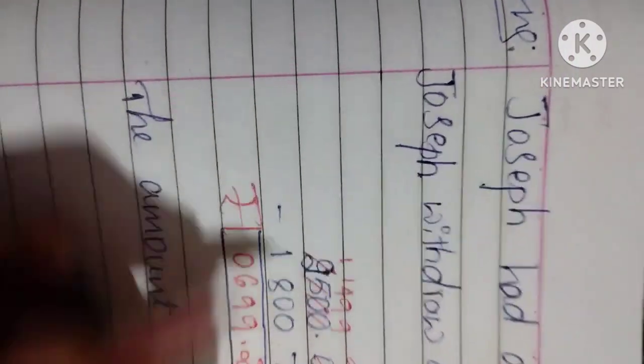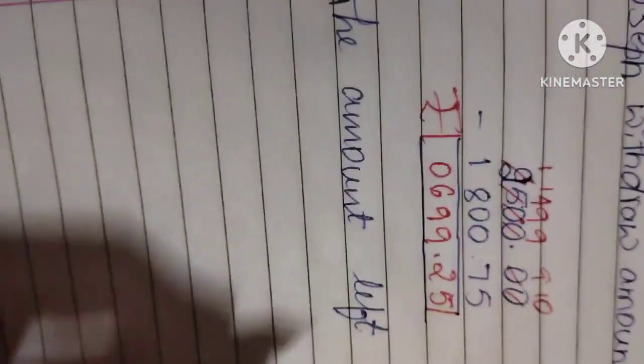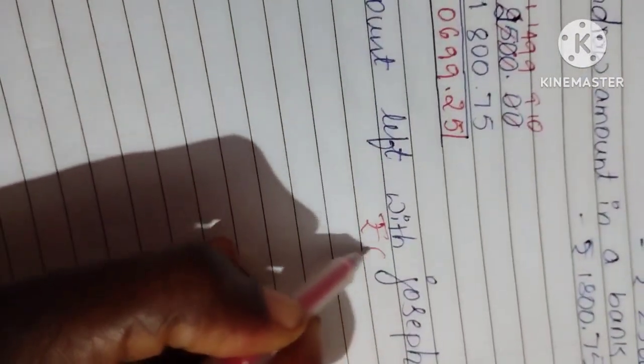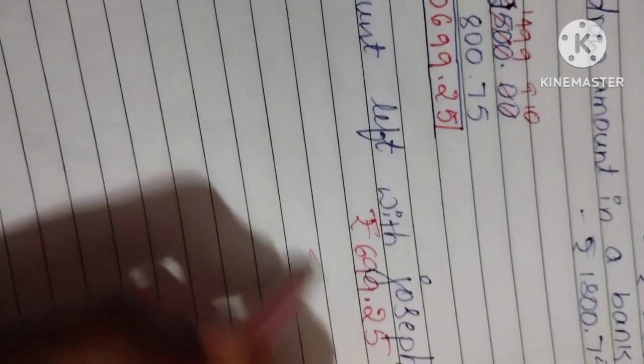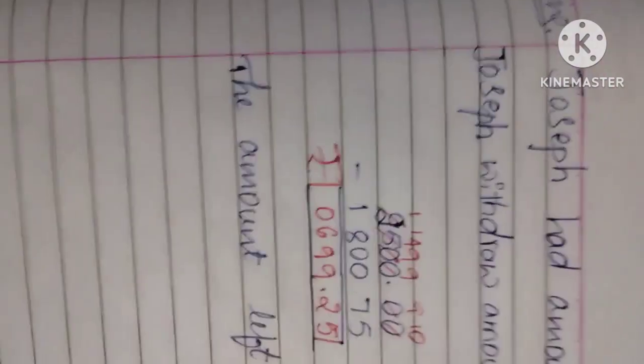So what is the amount Joseph have? Rupees 625.25. This amount he have. Thank you for watching.